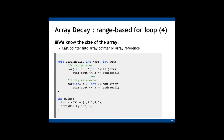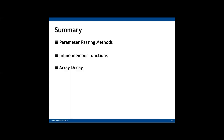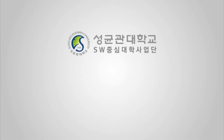So that covers array decay and detailed information about the range-based for loop. In summary, in this session we learned about parameter passing methods — it is more efficient to use call by reference when passing class type arguments. We also talked about inline member functions: if you put the definition of a member function within the class definition, it becomes an inline member function, and you do not use the inline keyword for this. Finally, we talked about array decay, which is about losing array information. That's it for this week. See you next week!